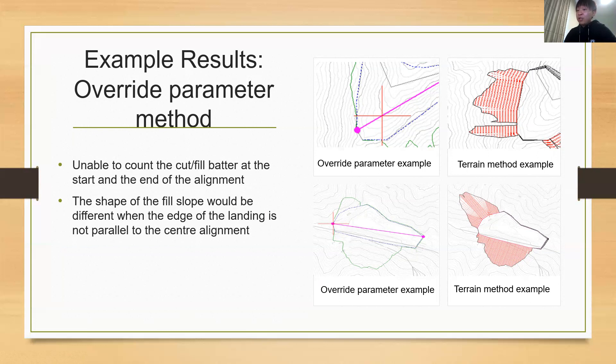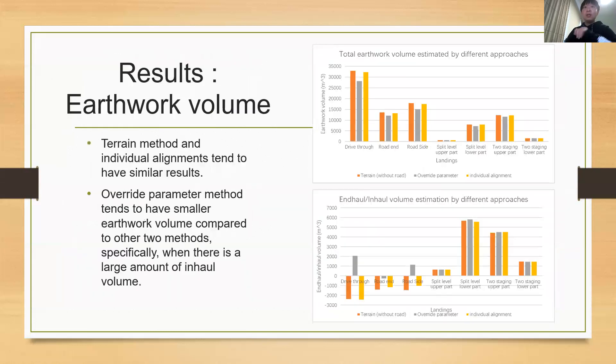In the graph, we can see slope calculated by terrain is perpendicular to the edge, and the override parameter method is perpendicular to the centerline. So, they will give a different slope estimation. In terms of earthwork volume, from the figure, it can also be found that the individual alignment method and terrain method have similar outcomes. And the override parameter method tends to have a smaller estimation, especially when the landing construction is under in-haul construction. This result is largely aligned with the reason I explained in the previous slide.